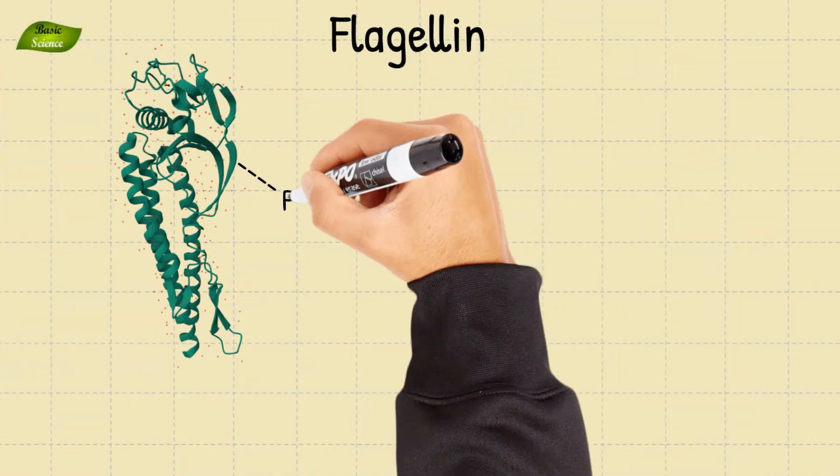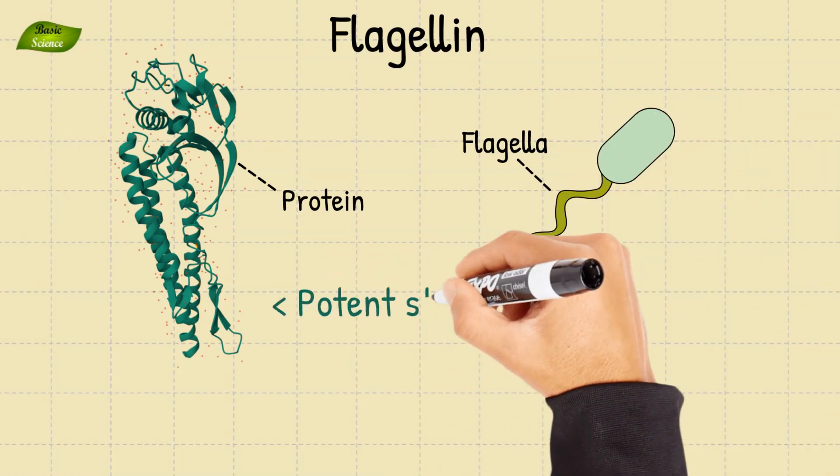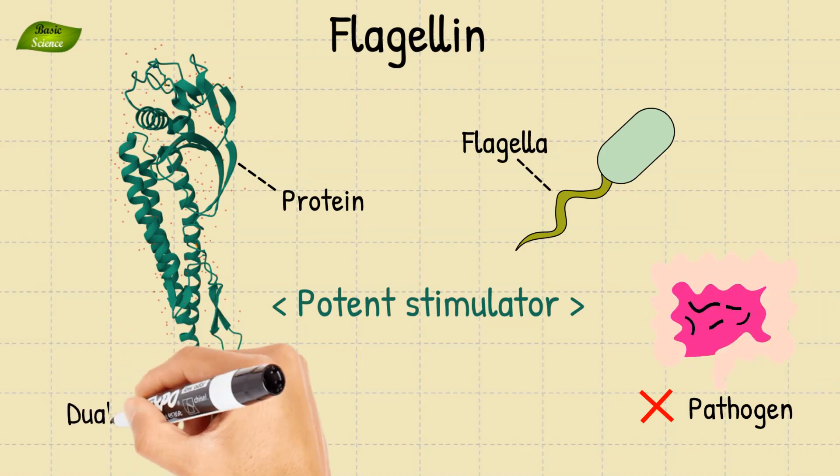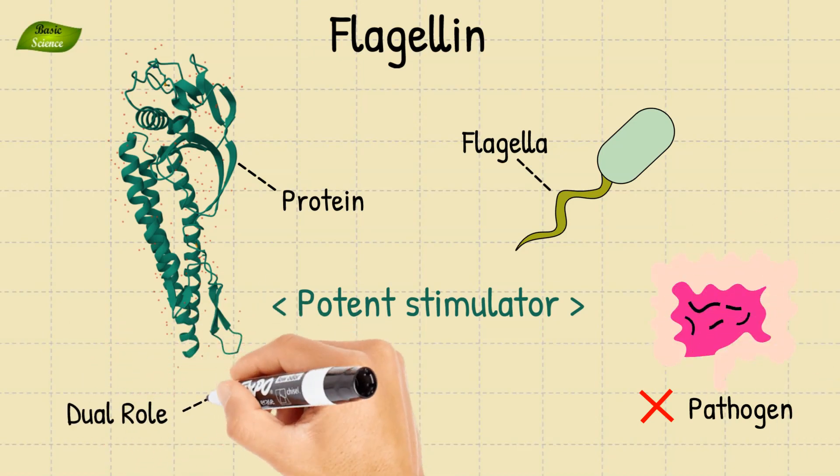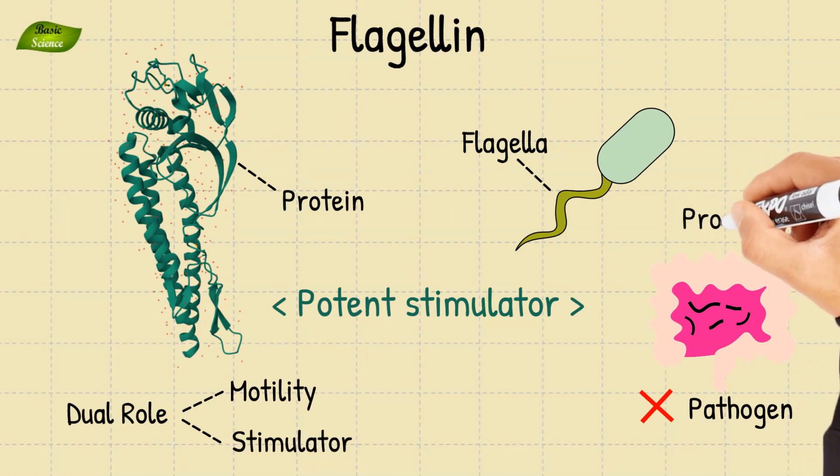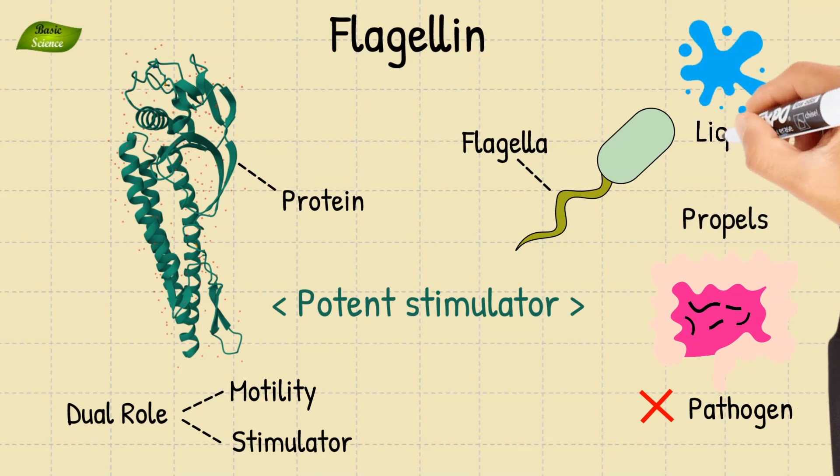Flagellin is a protein found in the flagella of bacteria. It is a potent stimulator of the immune system and can help to clear pathogens from the gut. Flagellin plays a dual role in bacterial motility and as a potent immune system modulator. This remarkable molecule propels bacteria through their liquid environments while simultaneously engaging host defense mechanisms.